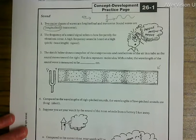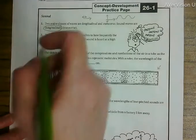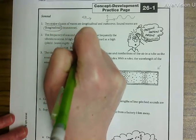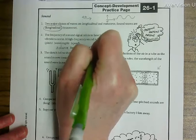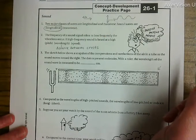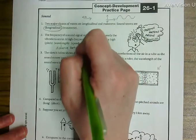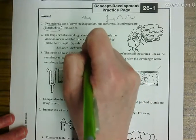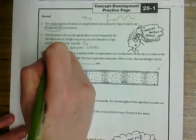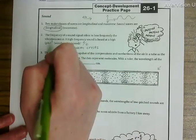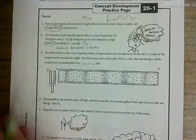The frequency of a sound signal refers to how frequently the vibrations occur. A high frequency sound is heard as a high pitch. Wavelength or speed? Remember that wavelength is the distance between crests. Speed is just distance per time. What we hear is frequency of vibrations. A higher frequency sound, we perceive it, our ears perceive it as a high pitch.